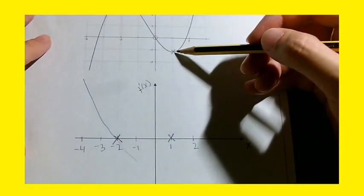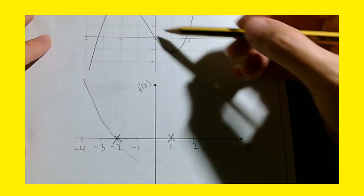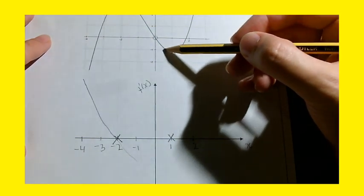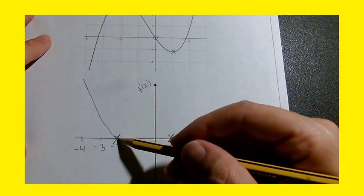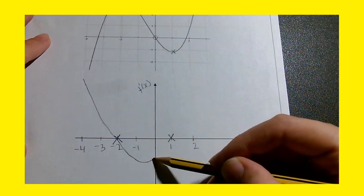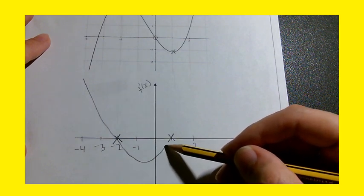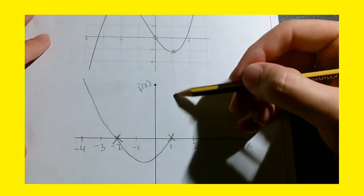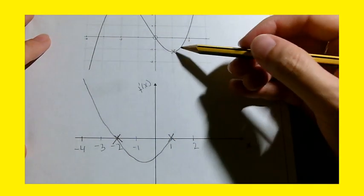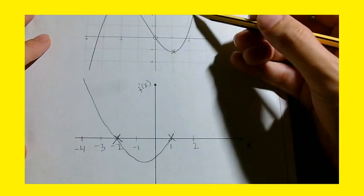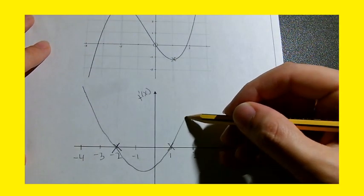When it gets to minus 1, that gradient slowly turns from negative to 0. What I'd like to see in my derivative graph is a situation where negative values of the gradient will come up to 0 here. After this x-value of 1 the gradient becomes positive again so it's going to go up like that.